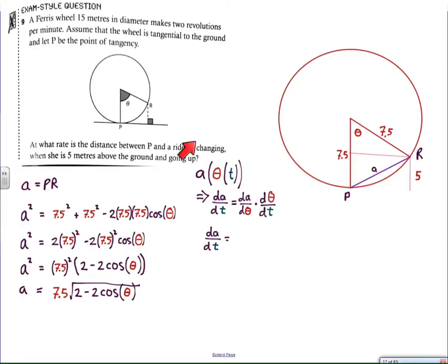That's done. Now, what we have to remember is A is dependent on theta, but theta is dependent on time. You're given how fast the Ferris wheel goes around: two revolutions per minute. The distance A depends on the angle, and the angle depends on how long the ride has been operating. There's a chain of dependency here. I'm going to apply the chain rule. The derivative of A with respect to time equals dA/dθ times dθ/dt.